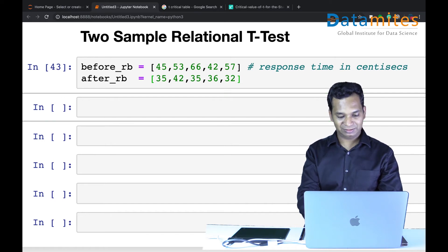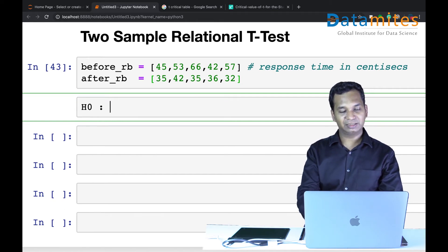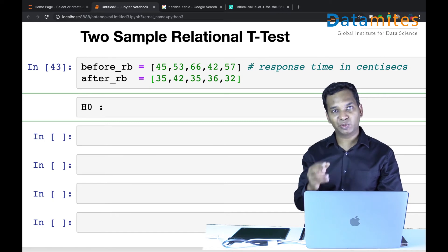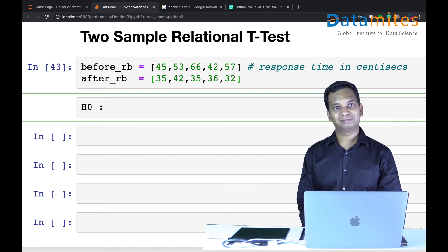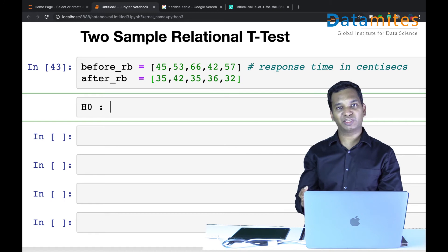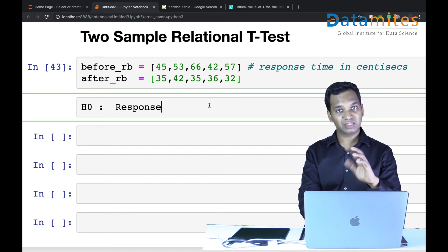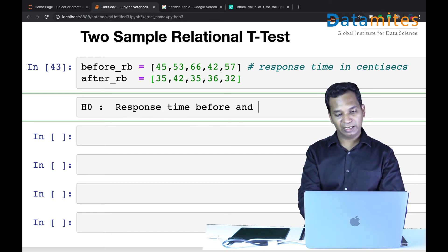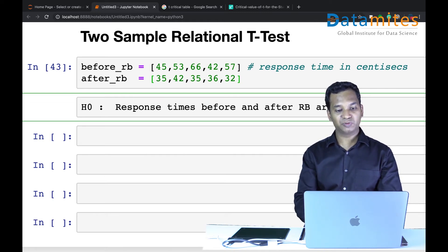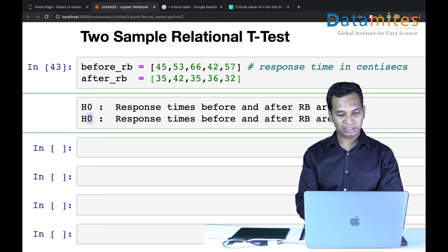Now I'm going to set up the hypothesis. By this time you should know what the null hypothesis is. As I keep saying, null hypothesis equates the data. Can you guess what the null hypothesis is for this? You could probably pause the video and try to formulate the hypothesis yourself. The null hypothesis here is the response time equates the data. Response times before and after Red Bull are the same. The alternate hypothesis is they are not the same.